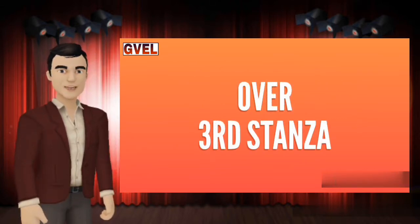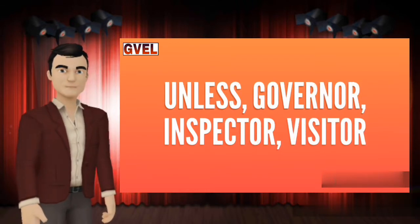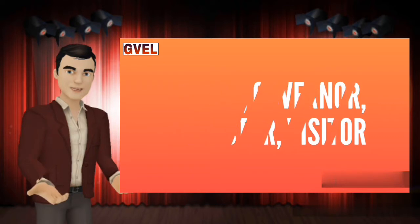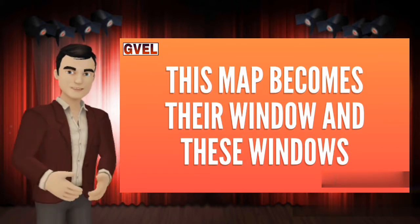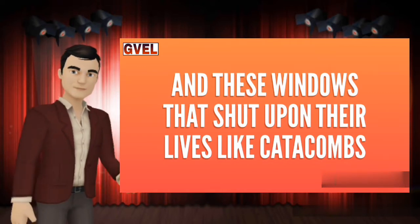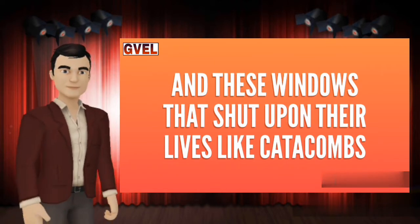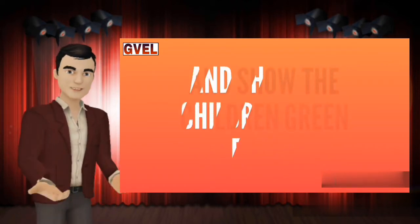This was the explanation of the third stanza. Now let's start the last stanza of this poem. 'Unless, governor, inspector, visitor' — poet kehta hai ke jabke governor, inspector aur visitor un gandi bastiyon ko improve karne ki koshish karte hain, 'this map becomes their window and these windows that shut upon their lives like catacombs.' — Using simile here. 'Brick by brick open till they break the town.' — Aisi gandi bastiyon ko tor dijiye, aur torte rahiye jab tak ke ye gandi bastiyan sheher mein tabdeel na ho jayen — break open the slums until they become part of the city.